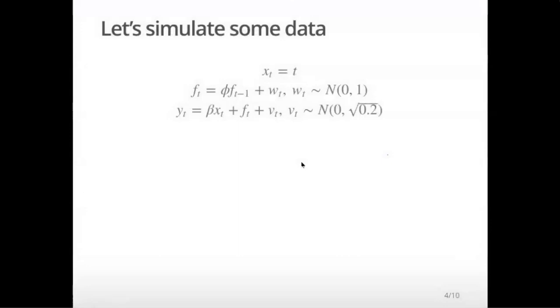Let's simulate some data here. As my F, I have that AR1 process. Phi is not necessarily one. This isn't necessarily a random walk. And my T, my covariate is just T. If I have N time steps, it's going to be one, two, three, four, five, all the way up to N. Something really simple. And then my Y function, I'm going to get rid of the intercept. It's just a linear function of time. And then I have that autocorrelated F. And then I have some not correlated error, my vT.